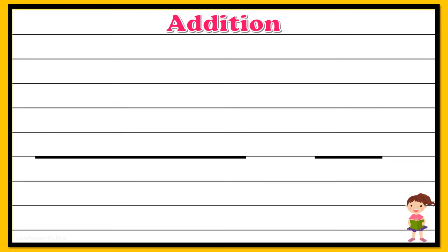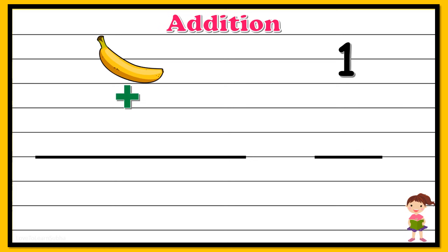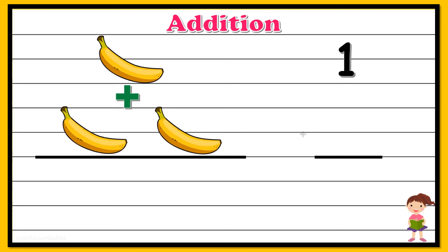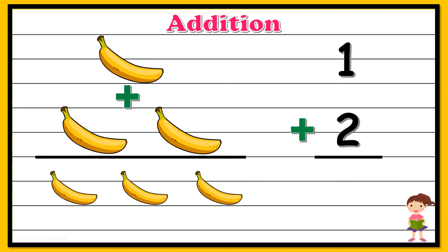Now I'll be showing you an example with a set of pictures where you have to add the objects to find the total. We have one banana plus two bananas. Let's start counting again: one, two, three. So totally we have three bananas. One plus two gives three.